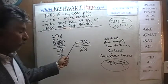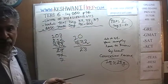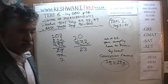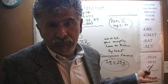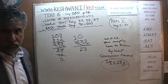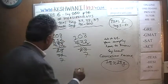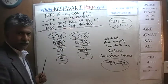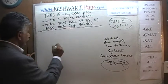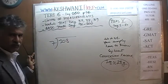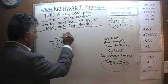Dividing 432 by 4: 4 has one 4, then 3 is too small so it joins the 2 to make 32, and 32 has eight 4s. So 432 divided by 4 is 108. And 28 divided by 4 is 7. Since 7 is a prime number and 108 is not divisible by 7, we're going to do long division: 108 divided by 7.